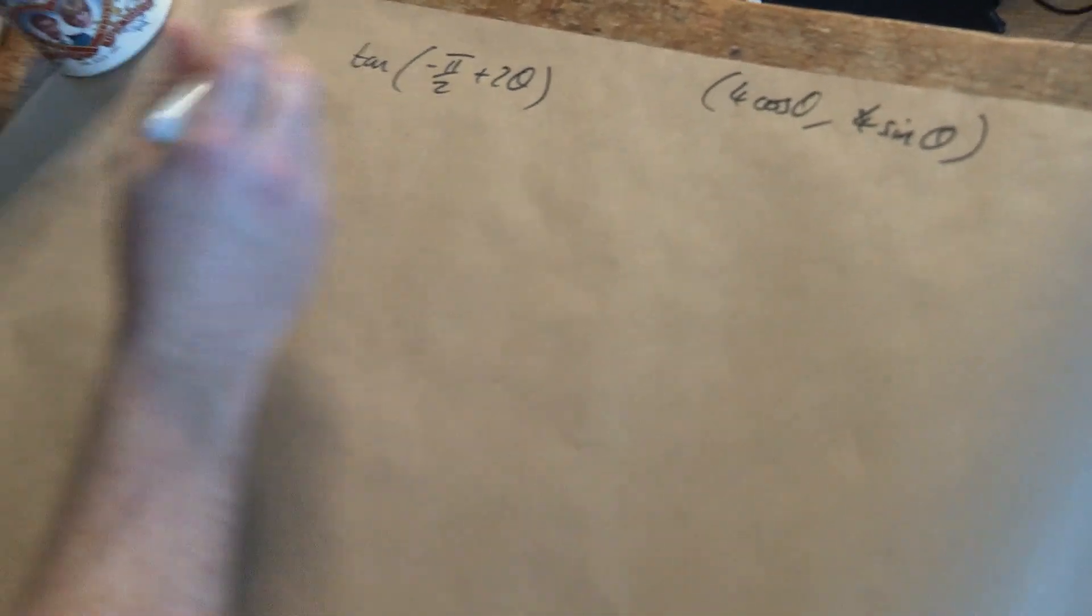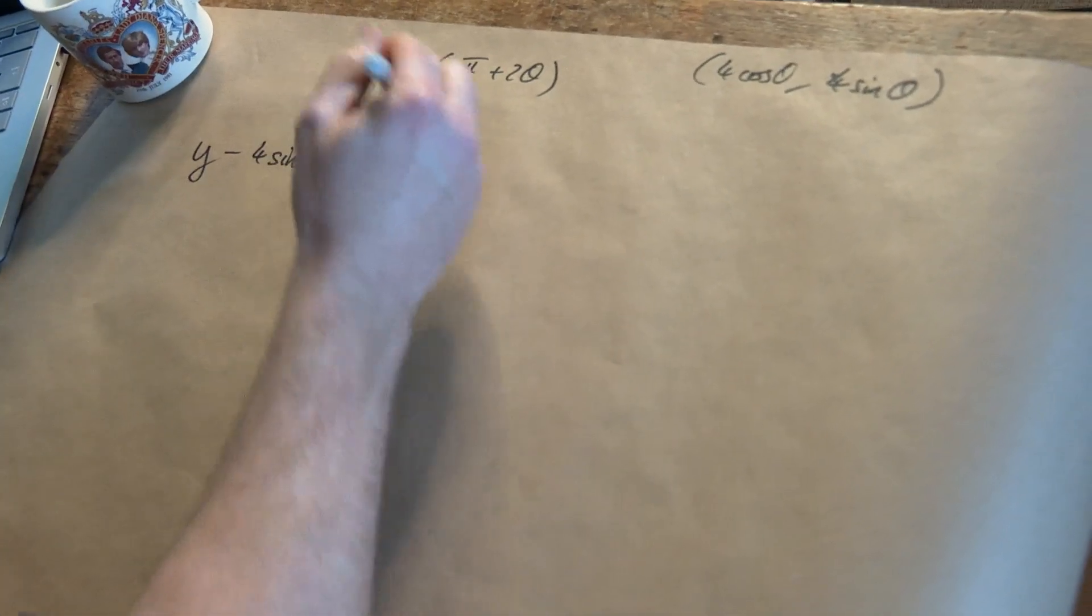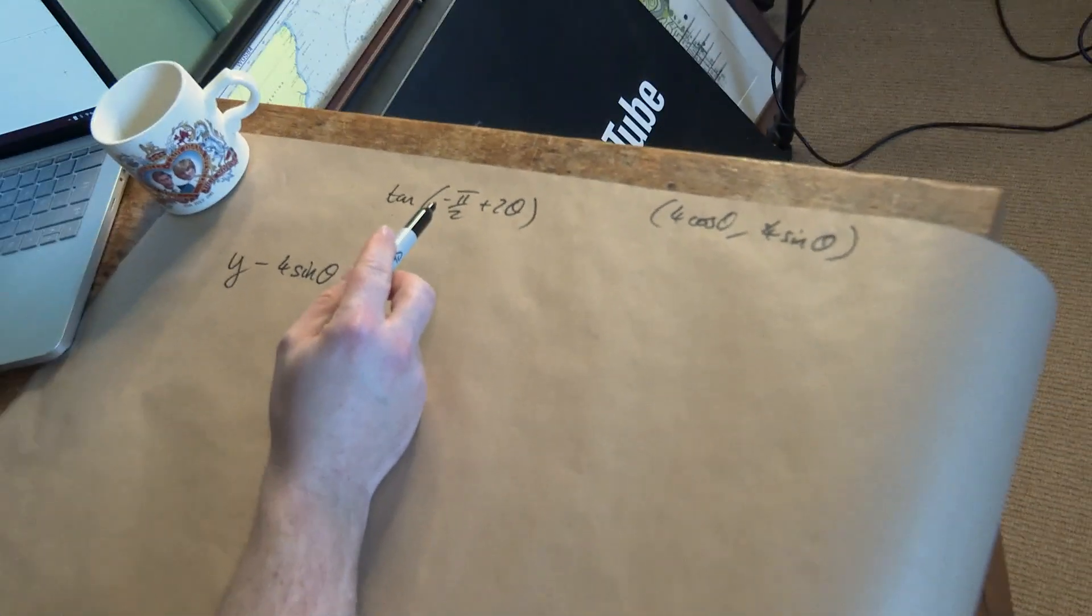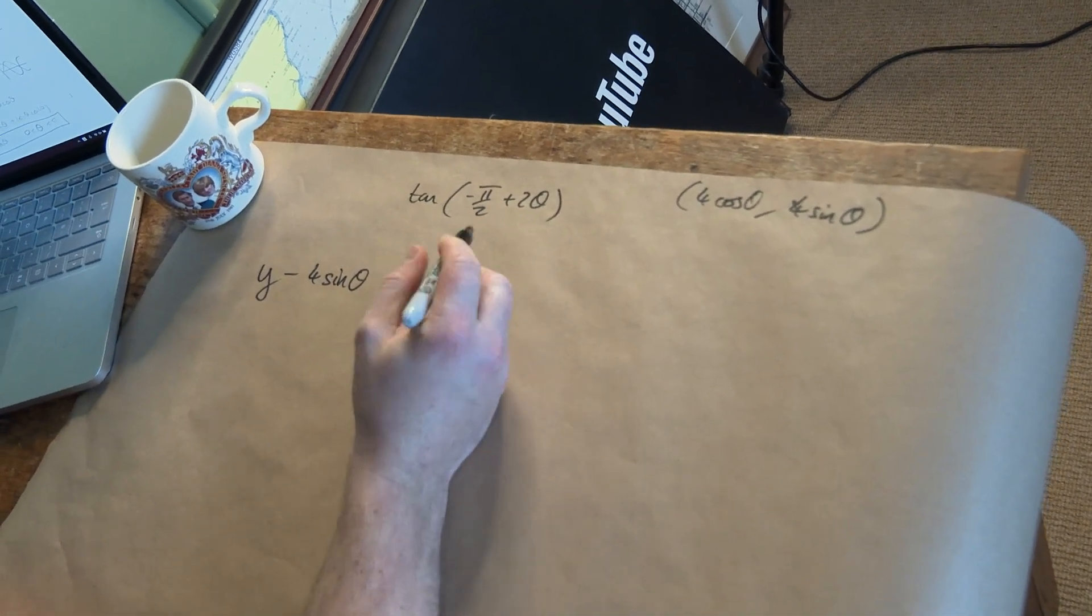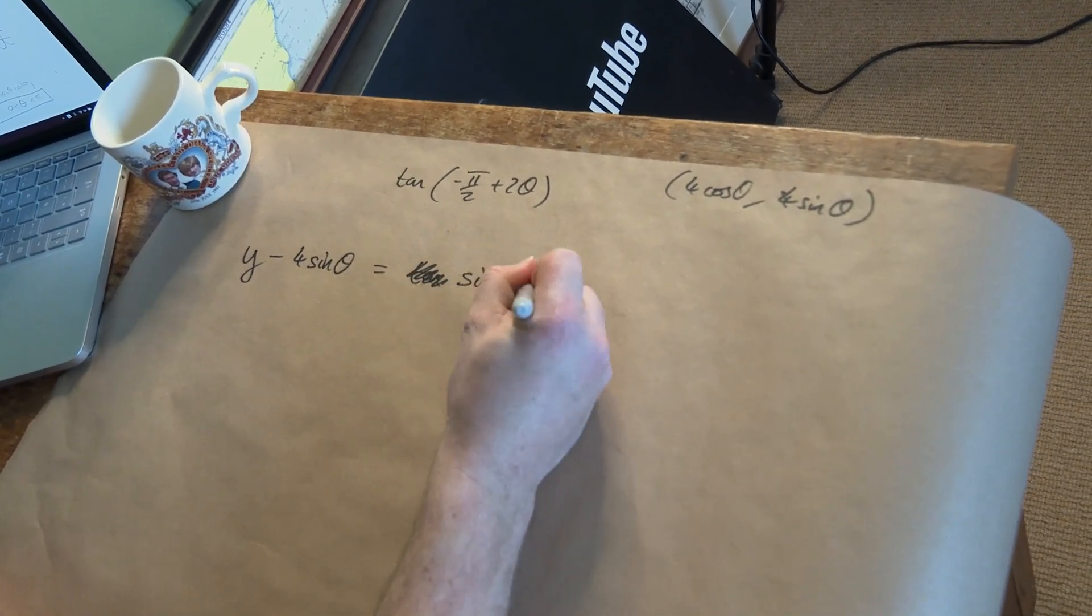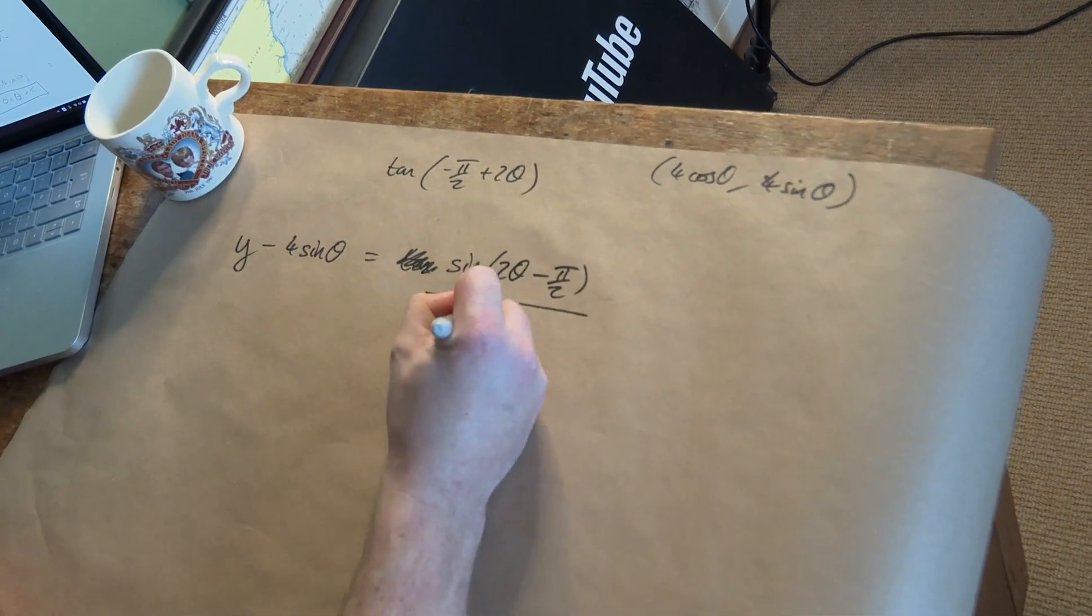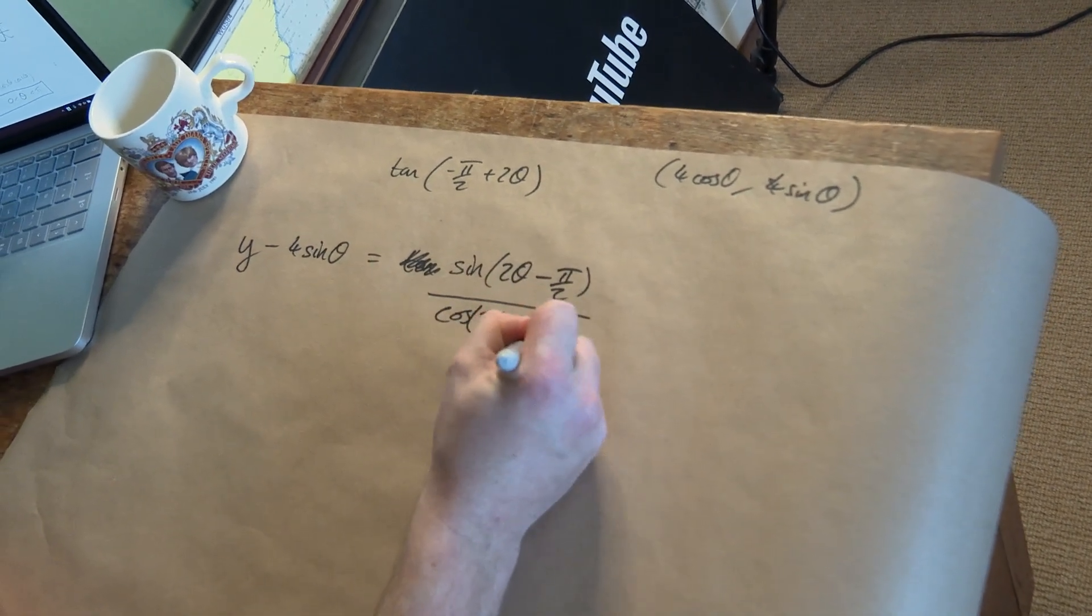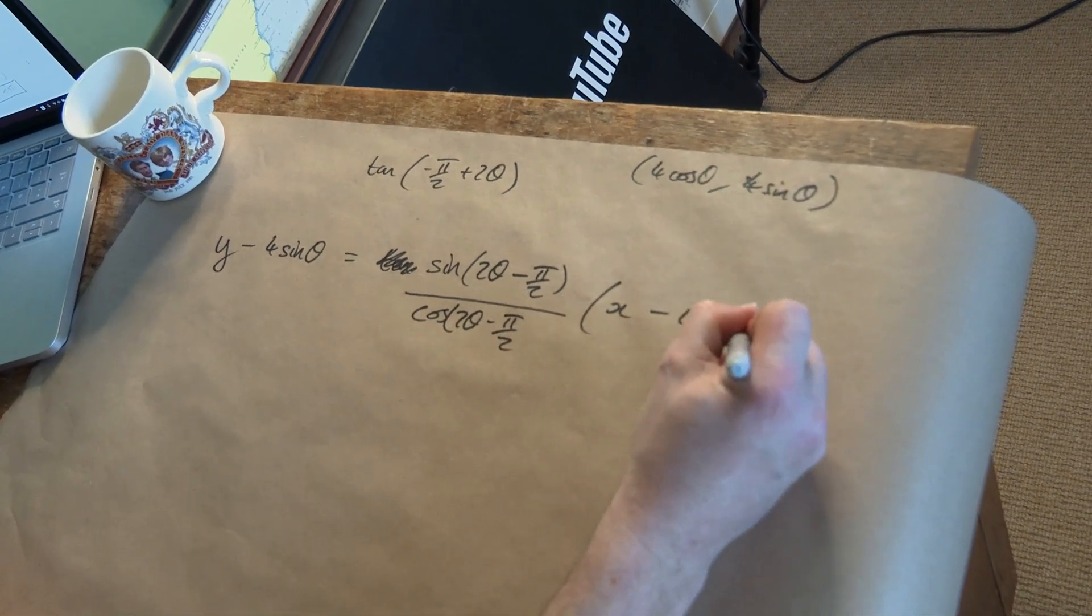So it's gonna look like y minus the y coordinate 4 sine theta equals the gradient, this thing here. Tan of pi by 2 is sine of that thing over cosine of that thing, that's how tangent works, so I'm gonna do that. I'm also gonna point out sine of 2 theta minus pi by 2 over cosine 2 theta minus pi by 2, and then the x coordinate is 4 cosine theta. That's slightly less gory than the other one.